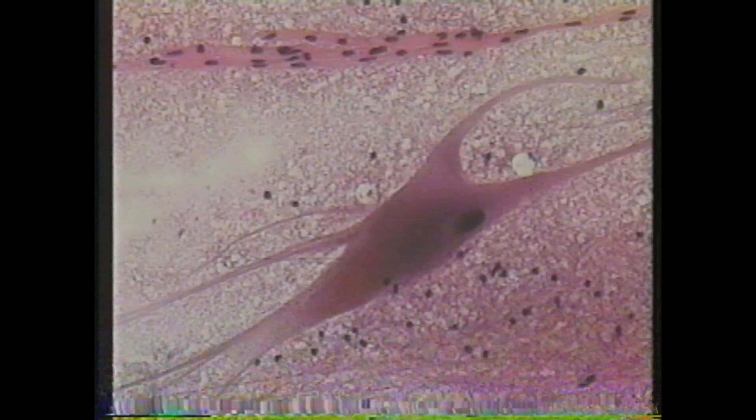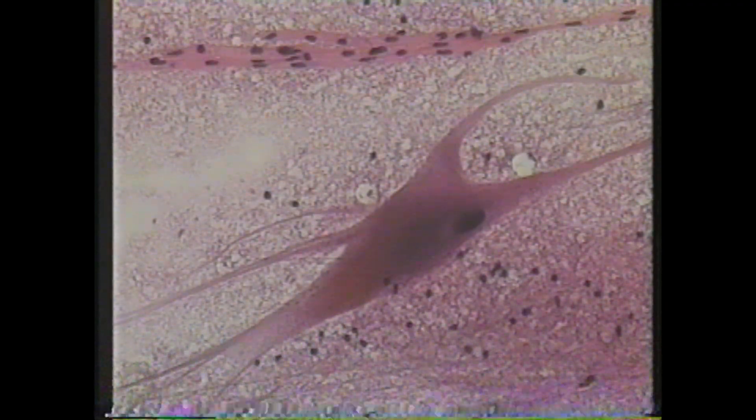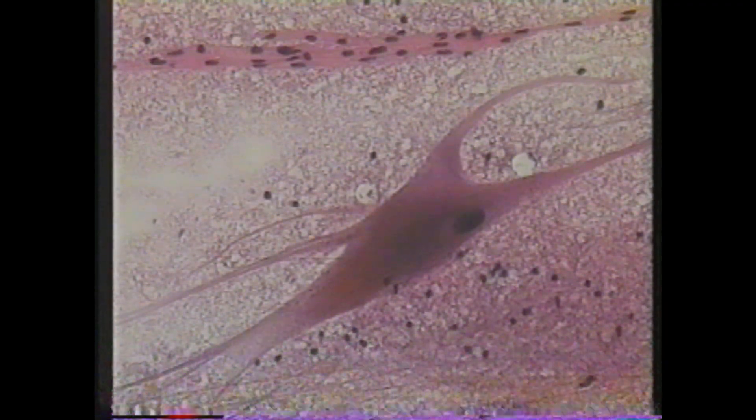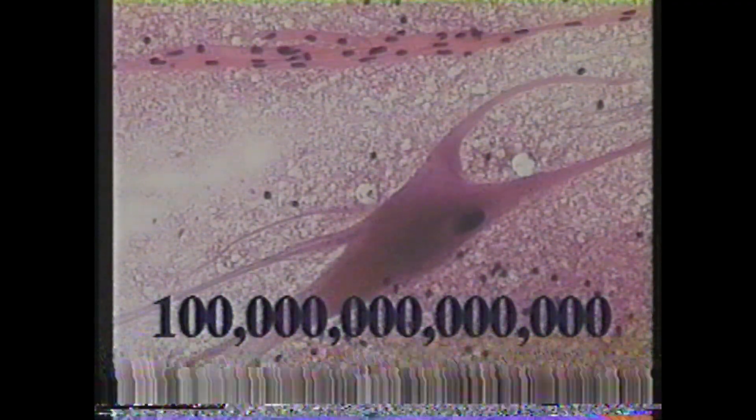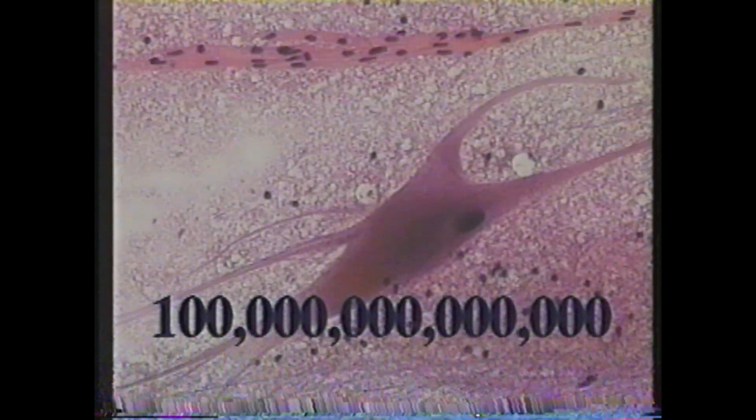For example, in humans, red blood cells transport oxygen to all parts of the body. Muscle cells aid in movement. Skin cells provide protection from the environment. And nerve cells transmit messages throughout the body. In fact, each person is a community of about 100 trillion cells.